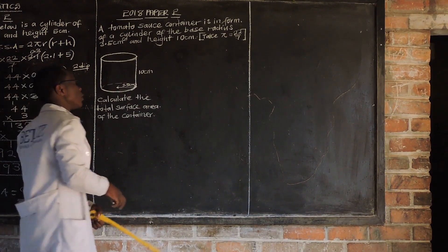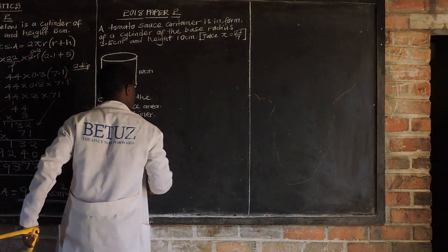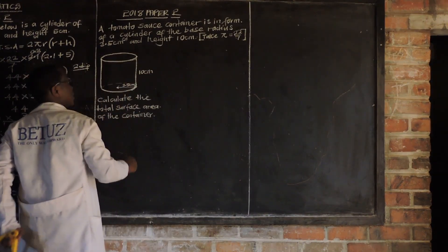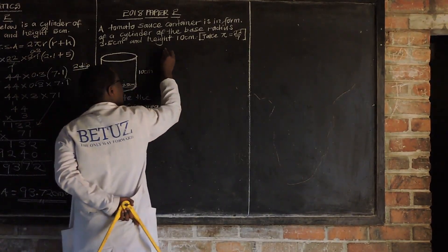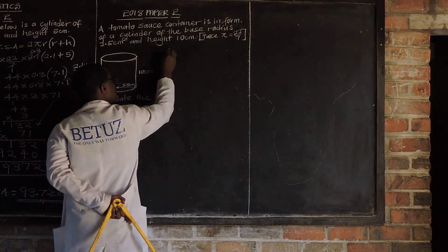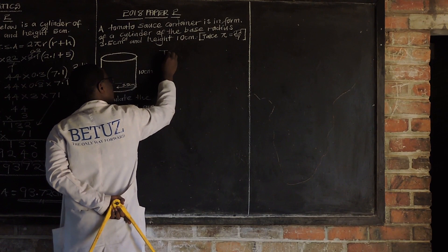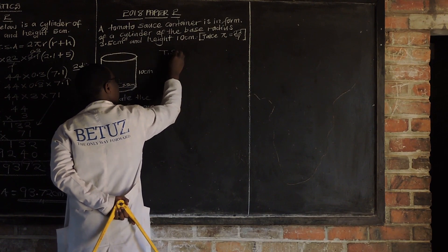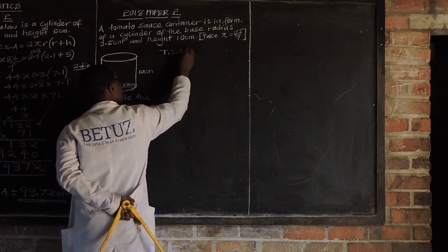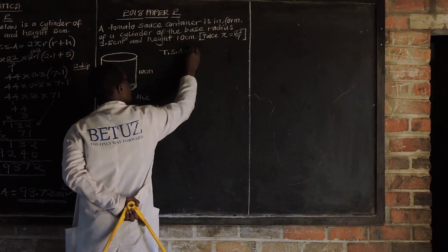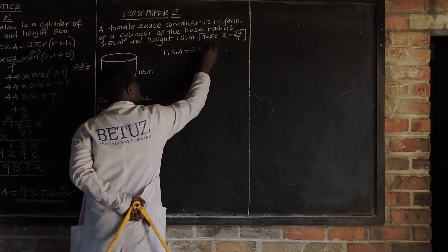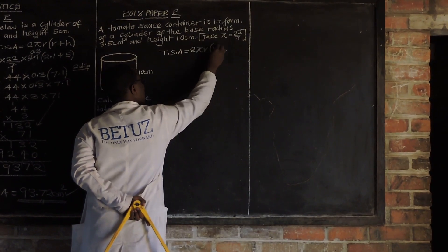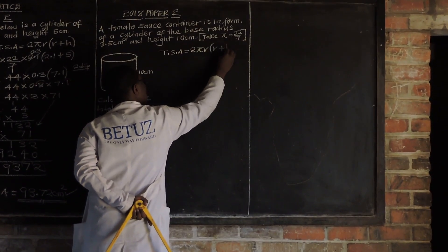I'm going to apply the formula, which is very, very important. Total surface area is equal to 2πr(r + h). That is our formula.